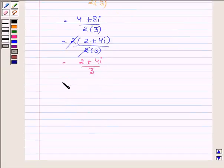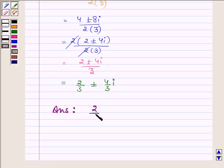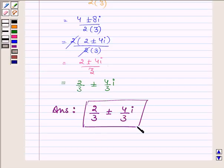Let us now separate the real and imaginary parts, so we have 2/3 ± 4i/3. So the solution of the given equation is 2/3 ± 4i/3. This completes the solution. Hope you enjoyed it, take care and have a good day.